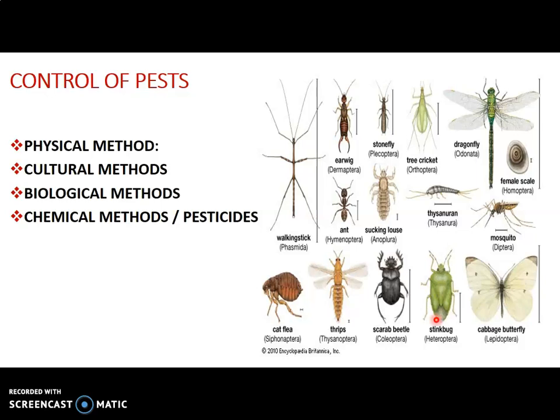There are four methods of pest control. The physical method involves physical activities to collect or destroy pests — using traps, picking them by hand, destroying them with your foot, burning, or flooding with water. Snails and caterpillars are often picked up by hand. Any physical measure taken to remove or destroy pests is called the physical method of pest control.